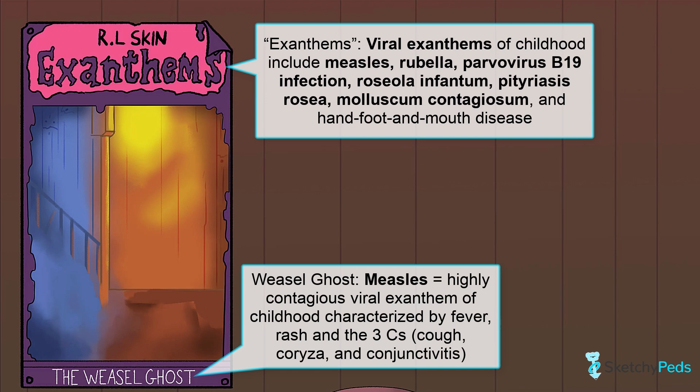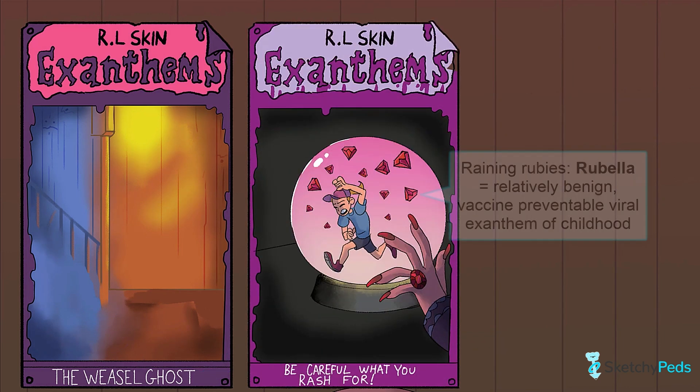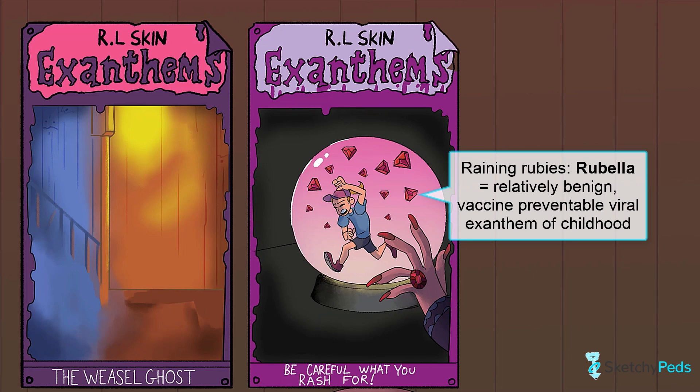You'll see all things measles depicted by the poster of the first book in the Exanthems series, The Weasel Ghost. This one's a classic. Next up, we've got rubella, caused by the rubella virus, and once upon a time called German measles. When acquired postnatally, rubella is a relatively benign disease and is vaccine-preventable. The presentation, workup, and treatment of rubella will take place in and around the poster for the next book in the Exanthems series, Be Careful What You Rash For. Spoiler alert — don't wish for rubies. Ever.